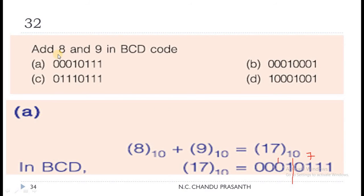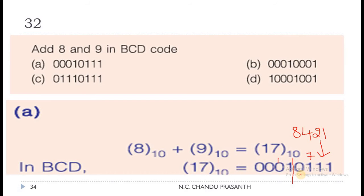Question 32: Add 8 and 9 in BCD code. Consider decimal numbers 8 and 9. Adding both: 8 + 9 = 17. Convert 17 into BCD: 7 is written as 0111 and 1 is written as 0001 in 8421 code. So in BCD the result is 0001 0111.